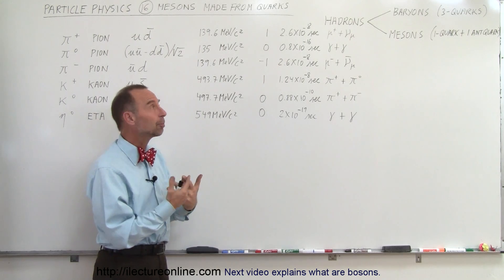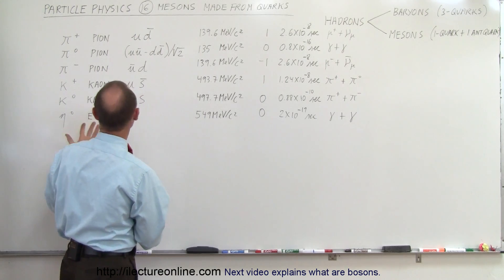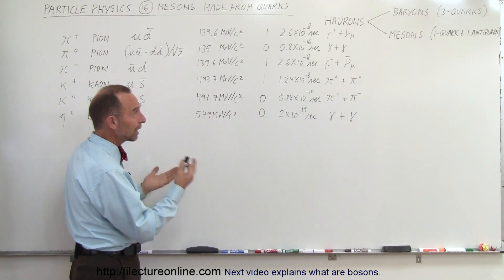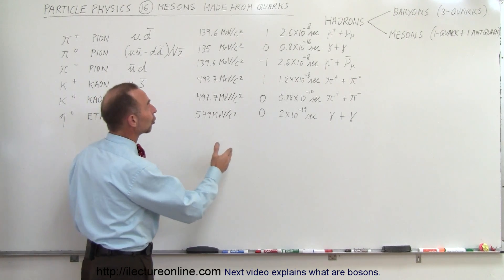Now, some of these are exchange particles, for example, the pion. But you can see that because they're made up of quark and antiquark, they have a very short lifespan.